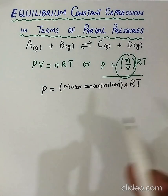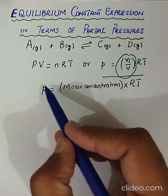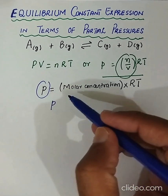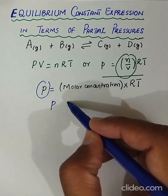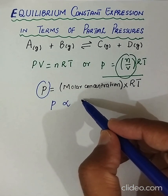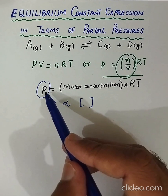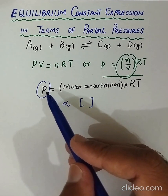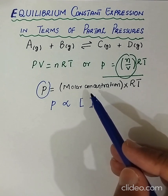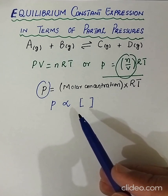From this equation we can see that the partial pressure of any gas in the equilibrium mixture is directly proportional to the molar concentration of any substance. So from this equation we can relate that the partial pressure of any gas in the equilibrium mixture is directly proportional to its molar concentration at a given temperature.